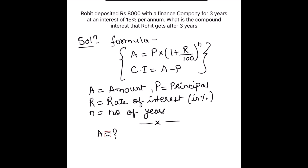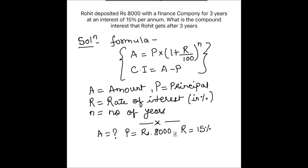Let's write the given values. The amount we need to find. The principal is given as rupees 8000. The rate of interest R is 15 percent, and N (number of years) is 3 years.